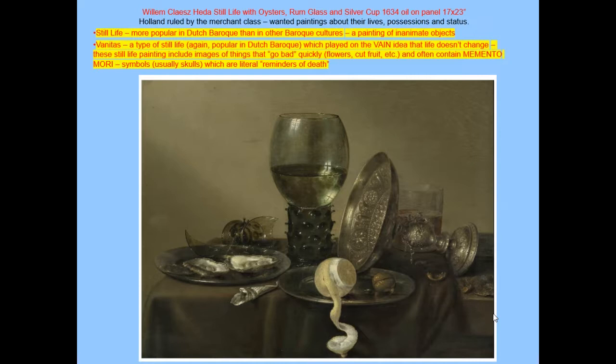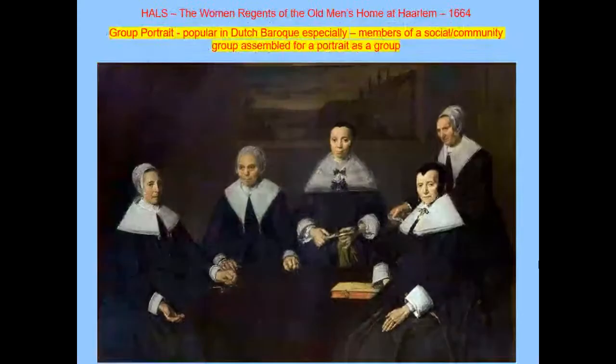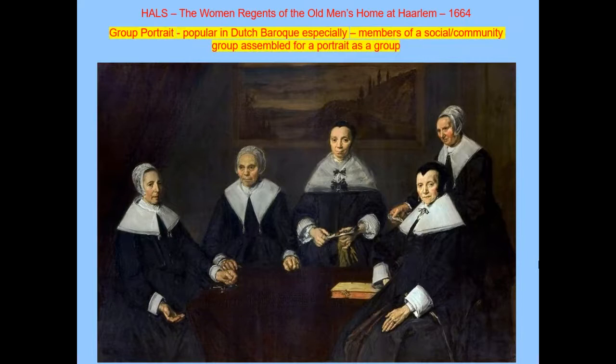A vanitas painting reminds you to enjoy life's pleasures — eating, drinking, enjoying life — but not to overindulge, because life is brief. Symbols like broken glass imply change, and peeled fruit will be sweet for a moment then start to spoil. Many vanitas still lifes include outright memento mori — literal reminders of death — sometimes hourglasses, but more frequently skulls.